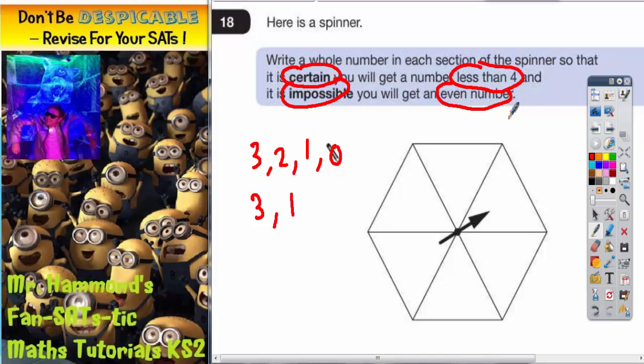So we just need to fill it with threes and ones. We could have one, one, one, three, three, three, or we could have a different combination. We could have one, three, one, three, three, one. It basically doesn't matter as long as you're filling it with ones and threes. It will be right.